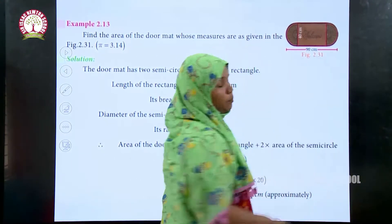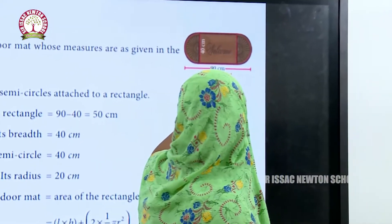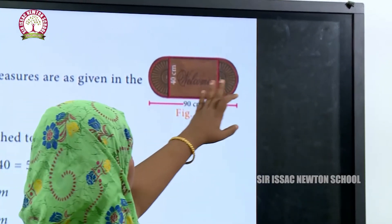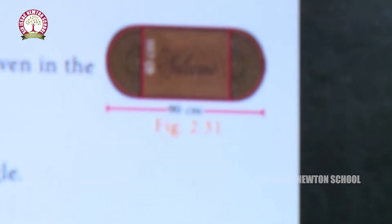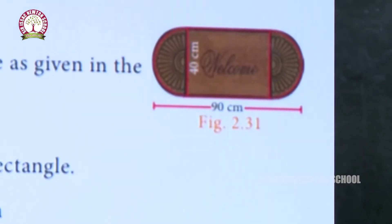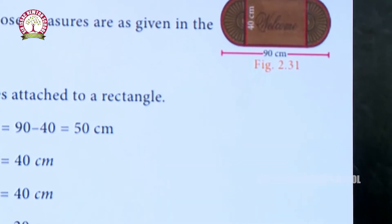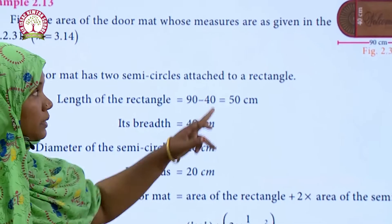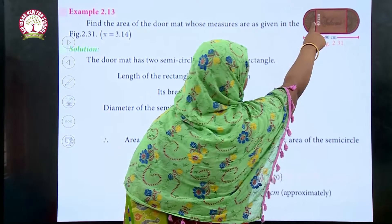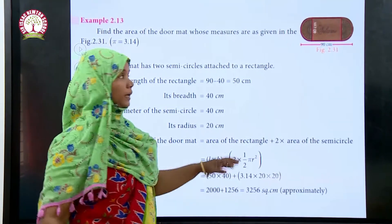The shape of the doormat has a rectangle in between — a rectangle of length 90 centimeters and breadth 40 centimeters — and two semicircles attached to both ends. The diameter of the semicircle is 40 centimeters, so the radius is diameter divided by 2, which gives 20 centimeters.